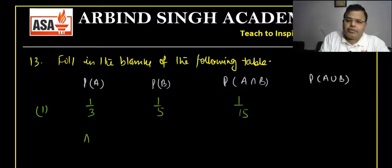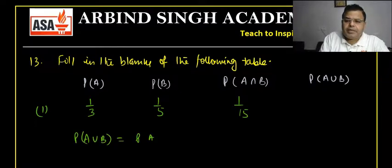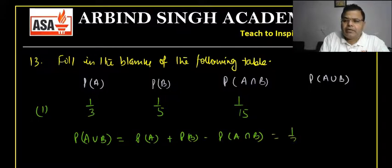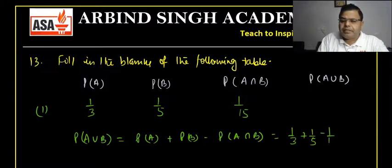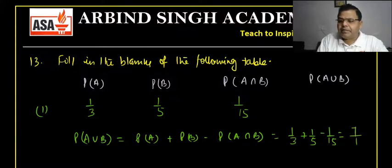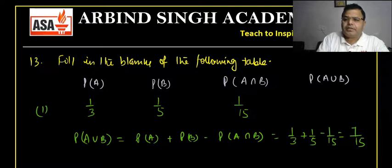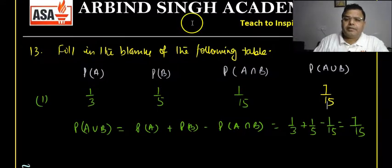Using the formula P(A ∪ B) = P(A) + P(B) − P(A ∩ B), we get 1/3 + 1/5 − 1/15 = (5 + 3 − 1)/15 = 7/15. So the answer is 7/15.